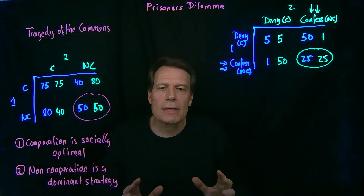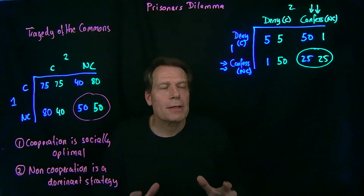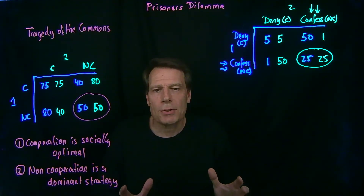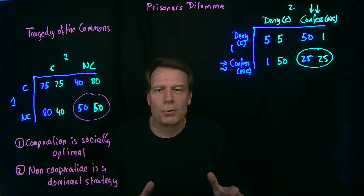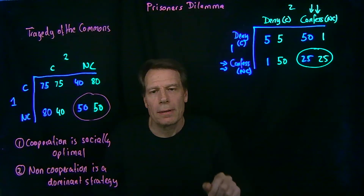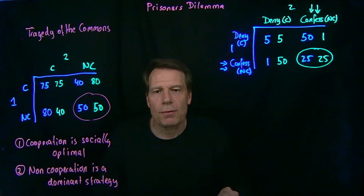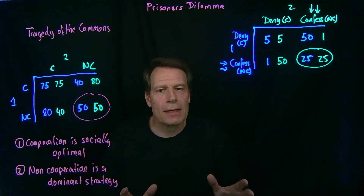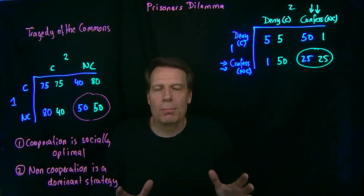So, the incentives of the game are that it's a dominant strategy to confess, the district attorney will get a confession from both, and they both will end up in jail for 25 years. Now, we could think about what might be a way out of that prisoner's dilemma.